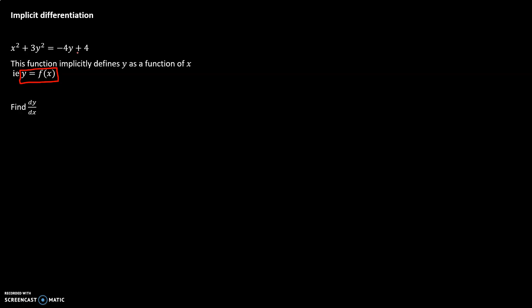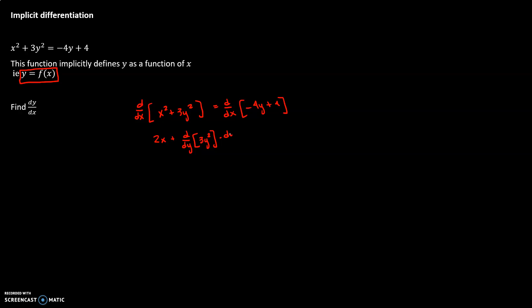Rather than trying to solve this and find a y equals f of x function, we can use implicit differentiation from calc 1. That's where you take the derivative of both sides of the equation. Taking the derivative with respect to x of x squared gives us 2x. With respect to x of 3y squared, that requires a chain rule: first the derivative with respect to y of 3y squared, then multiply by dy/dx.